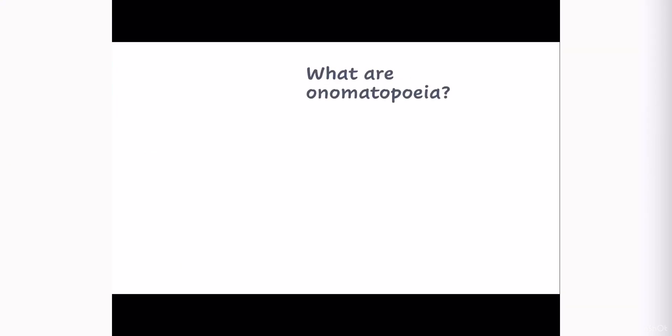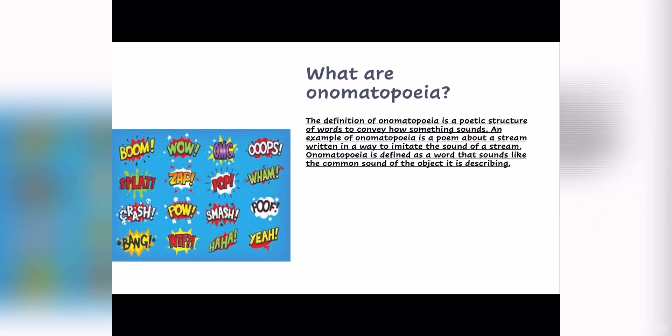Now let's move on to onomatopoeia. What is onomatopoeia? The definition of onomatopoeia is a poetic structure of words to convey how something sounds. An example of onomatopoeia is a poem about a stream written in a way to imitate the sound of a stream. Onomatopoeia is defined as a word that sounds like the common sound of the object it is describing.